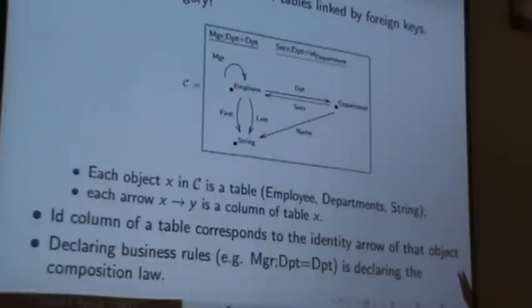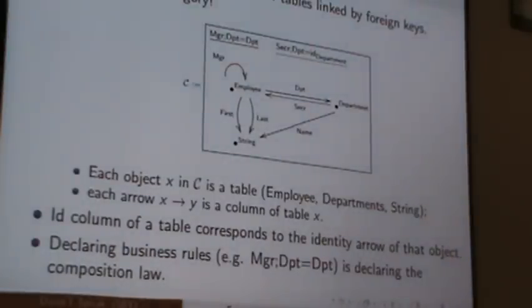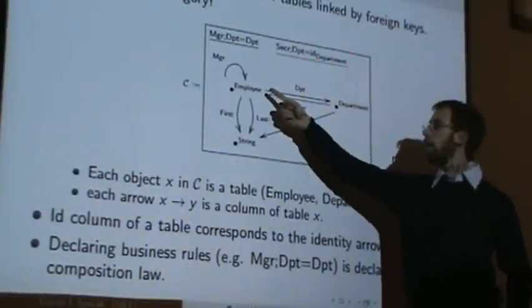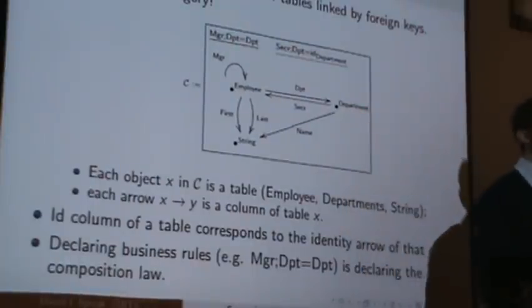Every object in the table, every arrow is a column. The source of the arrow is the table that that column is in, and the target of the arrow is where it takes its values.